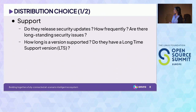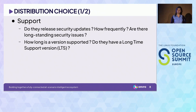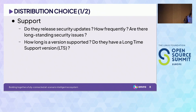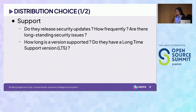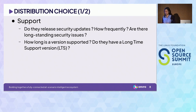When choosing a distribution, my first question is how they support it. How frequently do you get security updates? Question zero is: do they have security updates at all? And then how frequent are the security updates? Are there known long-standing security issues? — also an interesting question, and usually at this moment people start to hide. Then: how long is the version supported? You go back to day one and check if those two ranges actually match each other.